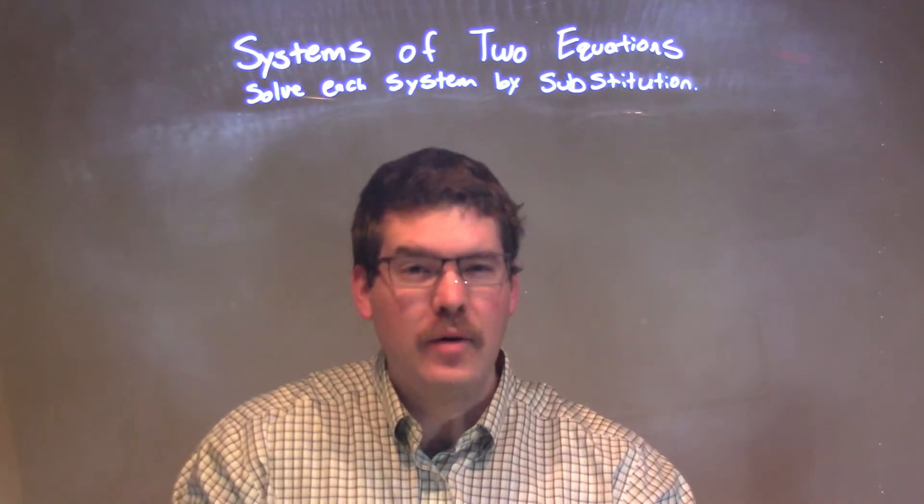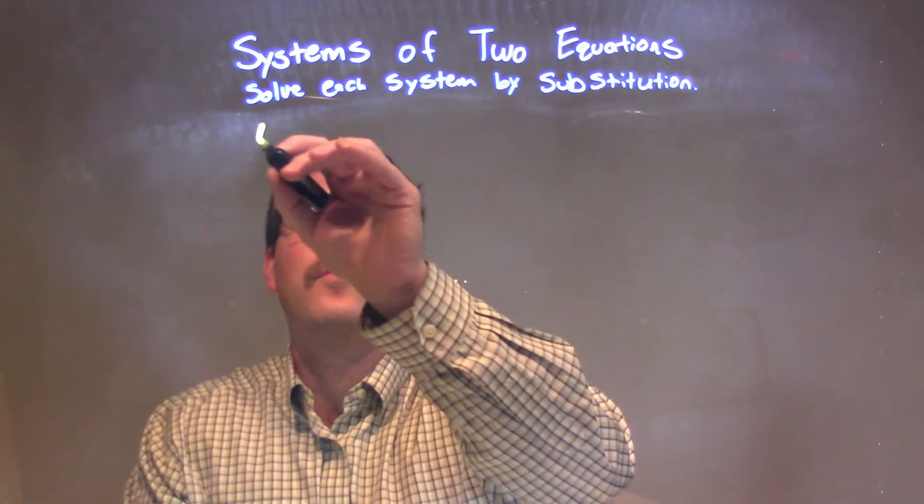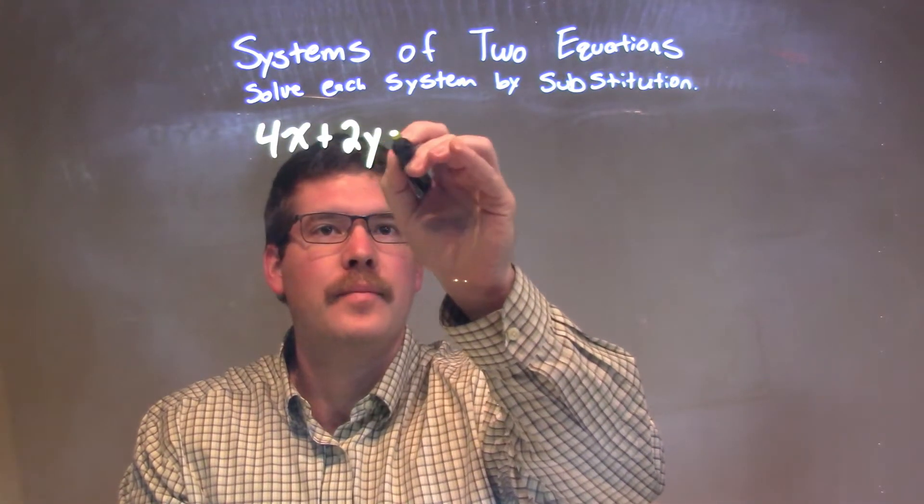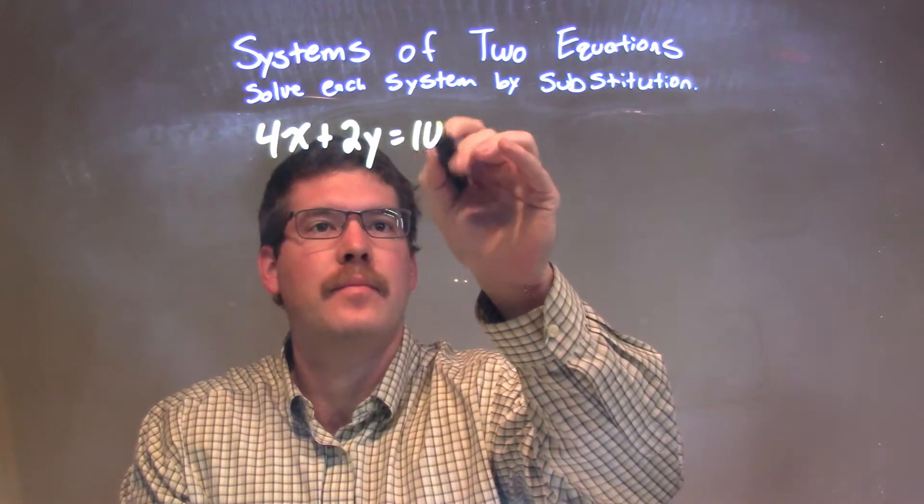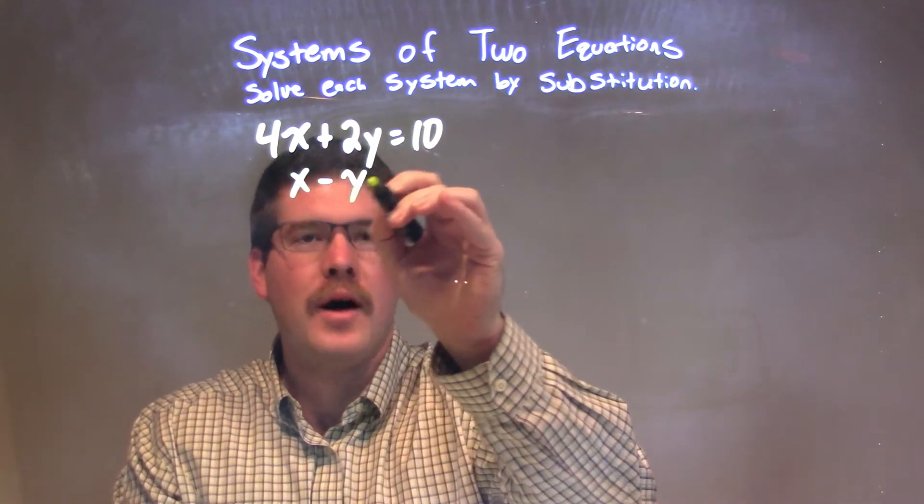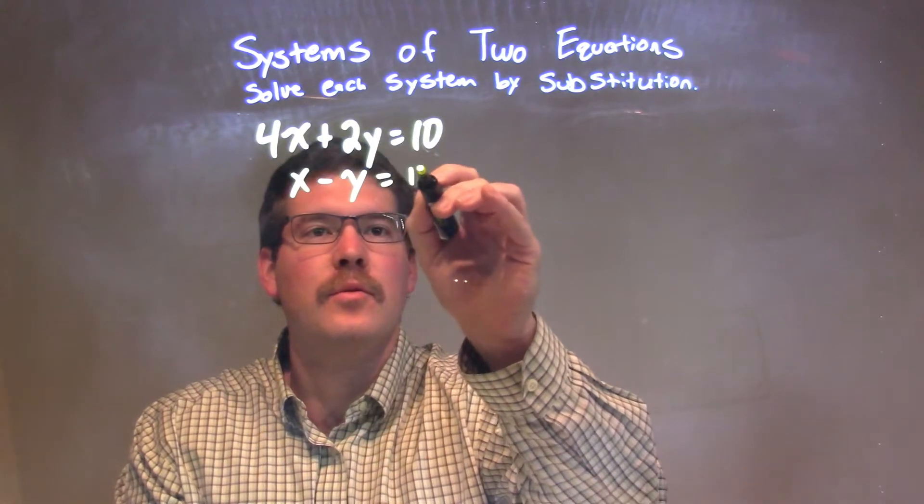So if I was given this system: 4x plus 2y equals 10, and my second equation, x minus y is equal to 13.